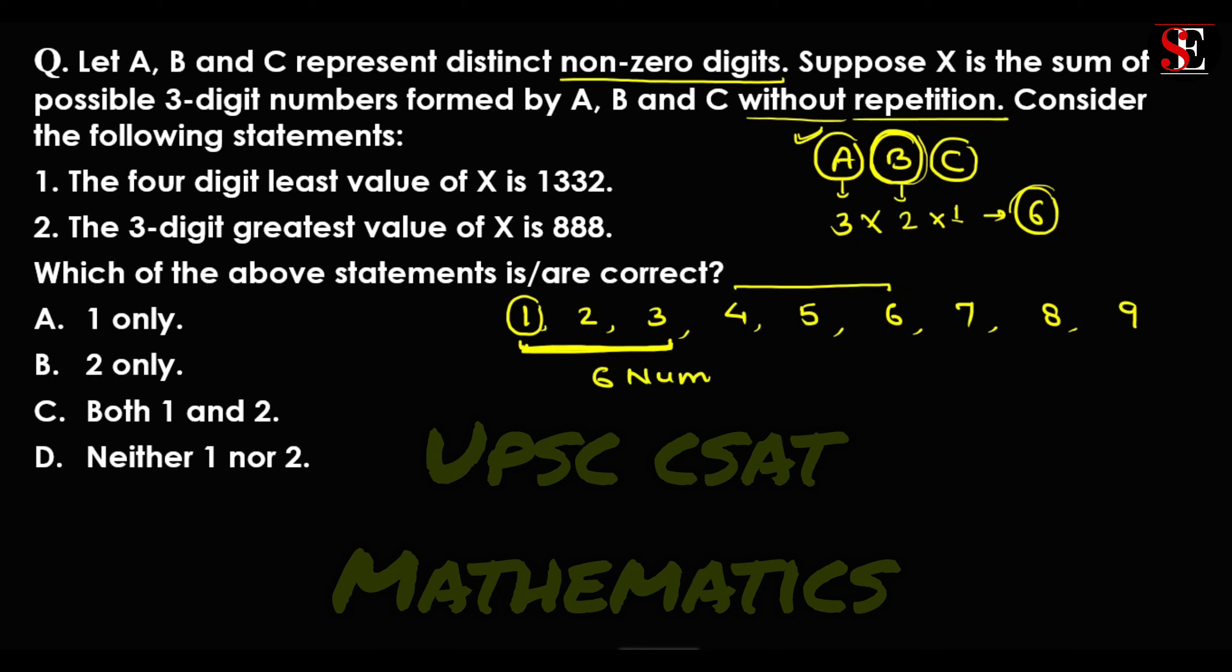How many numbers do we find? 6 numbers. What numbers do we find? First, 1 we have kept at 100 place, then 1 times 2, 3, and 1 times 3, 2. Same, 2 we keep at 100 place. These 6 are the numbers which are formed by using the digits 1, 2, and 3.